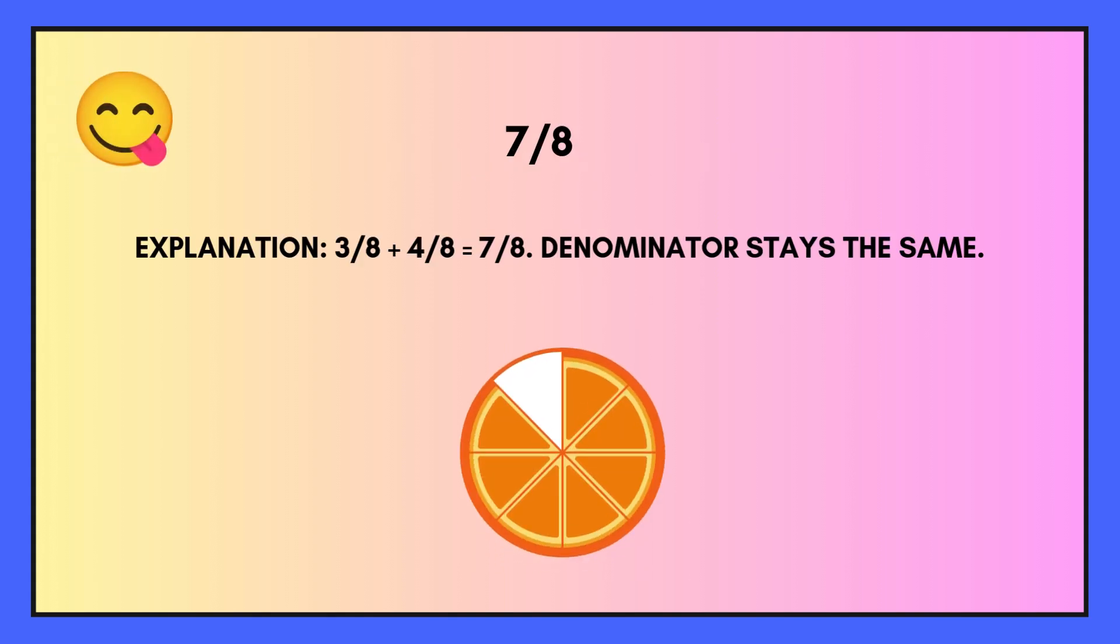The correct answer is 7 eighths. And the explanation is 3 plus 4 is 7. That's our numerator, and we keep the same denominator. 7 eighths.